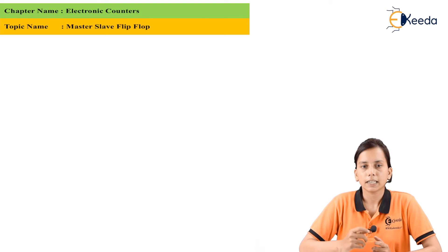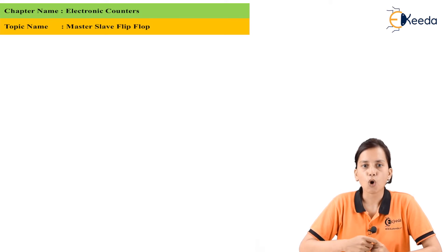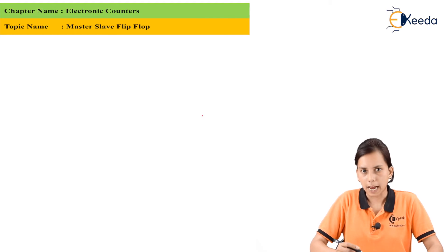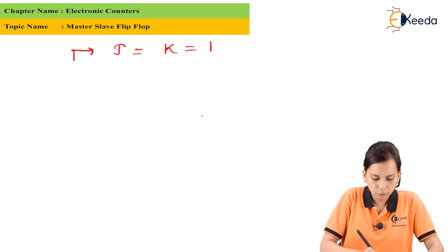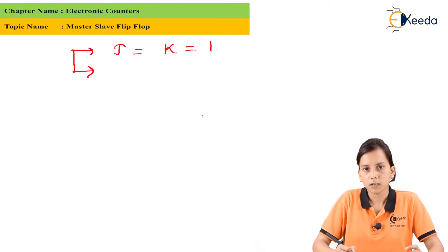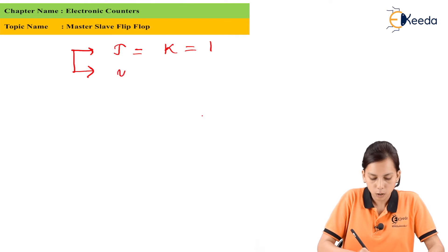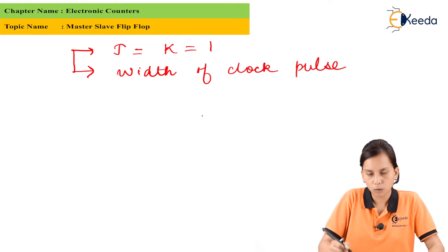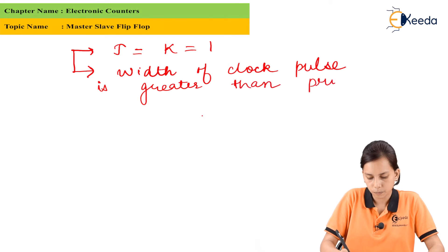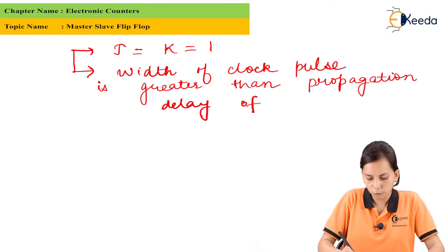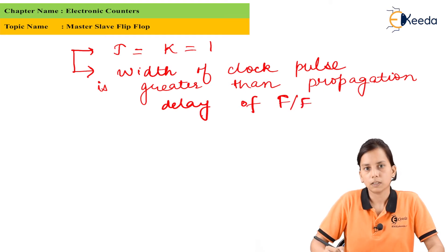Let us discuss again how the race-around condition occurs. The condition for racing is when J and K are both equal to 1 and the width of the clock pulse is greater than the propagation delay of the flip-flop — in this case, we always face the race-around problem.